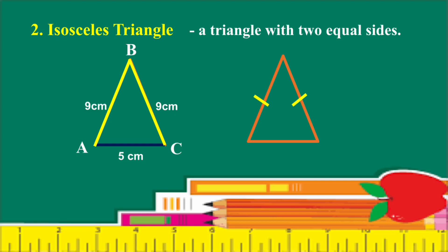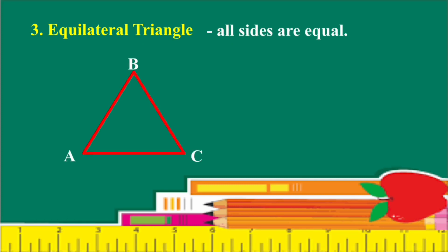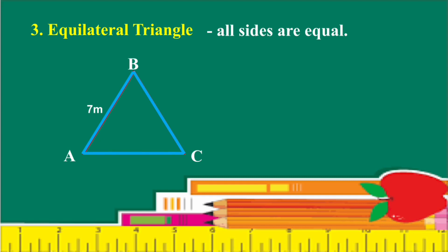Next is the Equilateral Triangle — a triangle where all sides are equal. For example, triangle ABC where AB is 7 meters. BC and AC are also 7 meters. Some figures are illustrated with the same markings on all sides.